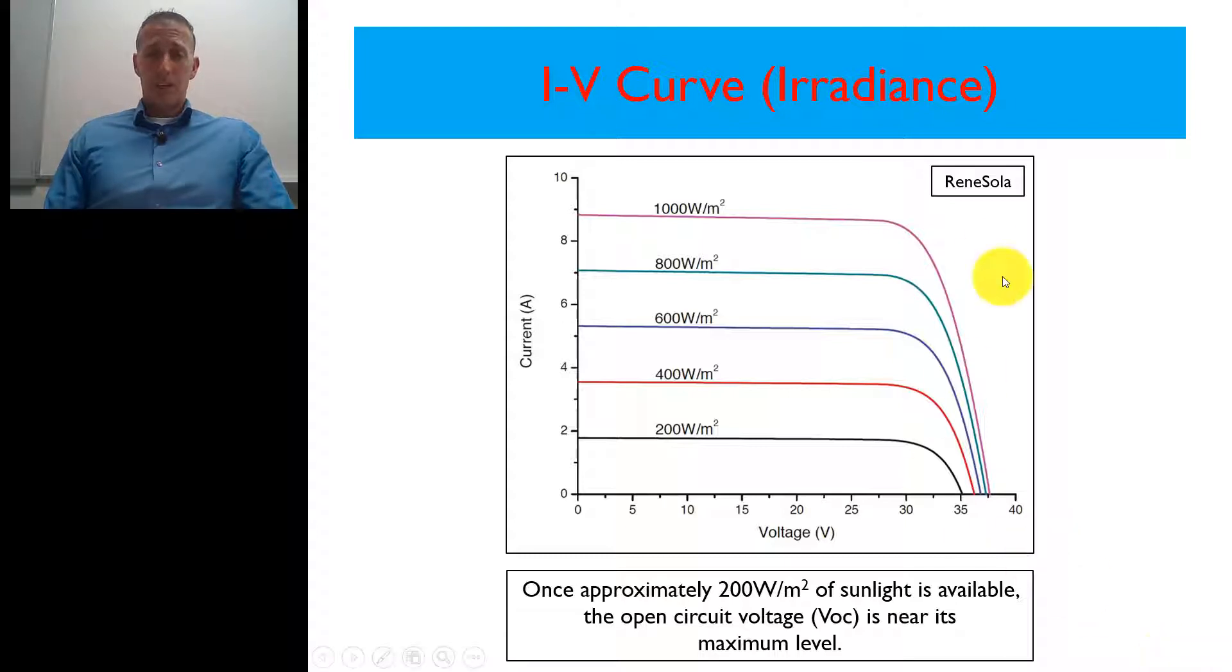So if you look at this image right here, when we go horizontally, this is voltage. We start at zero and the further we go to the right, the higher the voltage output of this specific module. And if we start at zero and if we go vertically, the higher up we go, the more current that is provided.